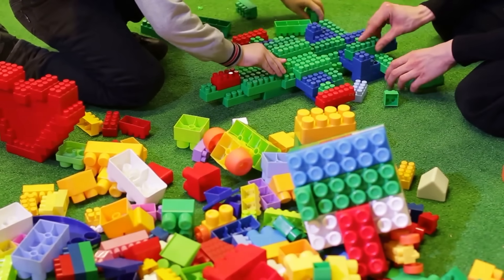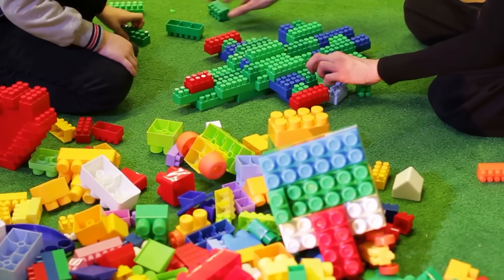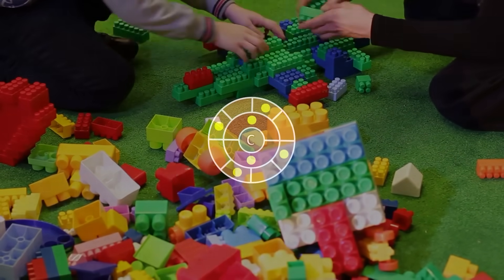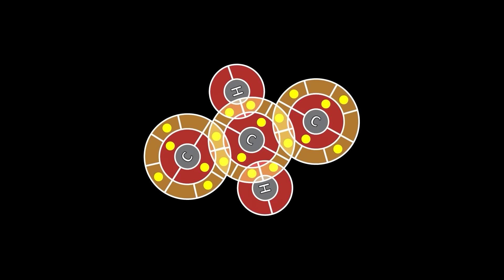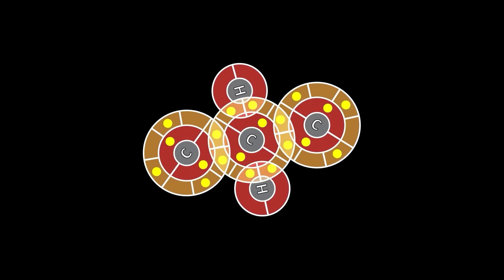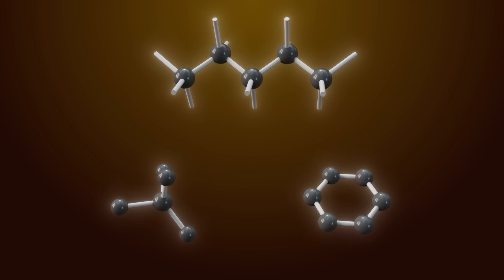Imagine if Lego bricks could be connected on four sides instead of two. It would make building things easier. Each carbon atom can form a strong, stable bond with up to four other atoms, including other carbon atoms. This feature gives it the ability to form complex molecules, which is necessary for the complex chemical functions that life requires.